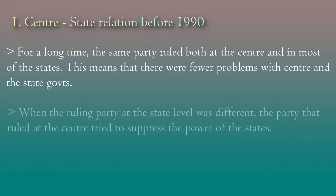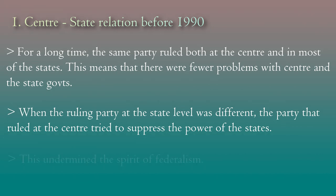When the ruling party at the state level was different — for example, the center was ruled by the Indian National Congress and the state was ruled by the Communist Party of India (Marxist) — then the party that ruled at the center tried to suppress the power of the states. This undermines the spirit of federalism. This was the situation of India before 1990.